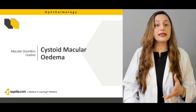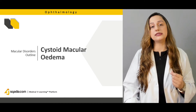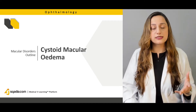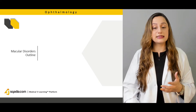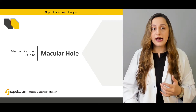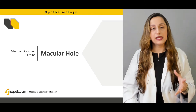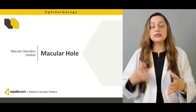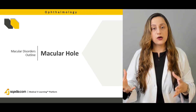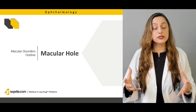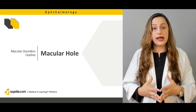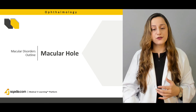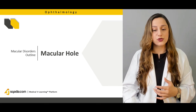We'll briefly summarize cystoid macular edema — the signs and symptoms along with management guidelines — and also the macular hole. The macular hole can be thought of in relation to retinal detachment. The final outcomes, diagnosis, and prognostic factors for this pathology will be summarized.